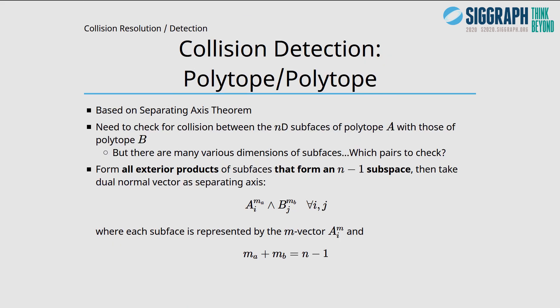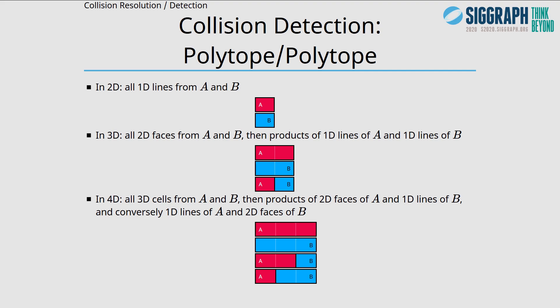The polytope to polytope collision algorithm is based on the separating axis theorem. We need to check for potential collisions between the N-D subfaces of polytope A with those of polytope B. Basically, form all exterior products of the subfaces that form an N-1 subspace, then take the dual vector as a separating axis. In 2D, that means all 1D lines from A and B. In 3D, all 2D faces from A and B, but also the products of 1D lines of A and B. In 4D, all 3D cells from A and B, but also the products of the 2D faces of A and the 1D lines of B, and conversely, the products of the 1D lines of A and the 2D faces of B.